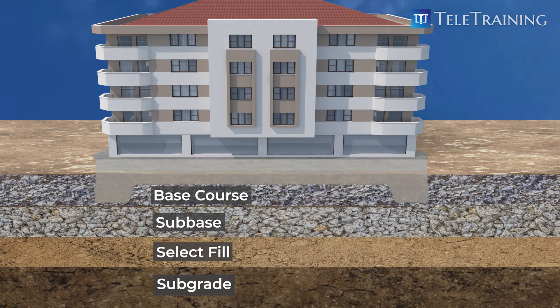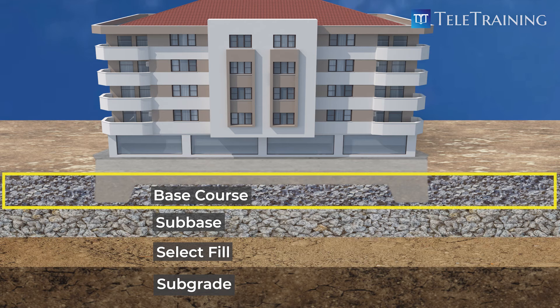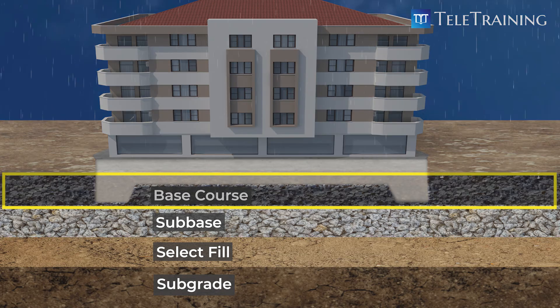Let's see from the top layer: Base Course. Base Course refers to the first foundation layer immediately underneath the slab or pavement. It provides load distribution and contributes to drainage.